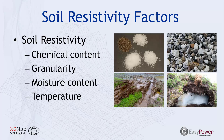Typically, when someone goes out and evaluates the resistivity of soil, they're looking at a more macro level — examining the chemical content, granularity or particle size, moisture content, and temperature. Understanding what contributes to greater electrolytic conduction helps us estimate what will reduce or increase resistivity. For example, higher chemical content and higher moisture content allow more charged ions in the material, yielding lower resistivity.